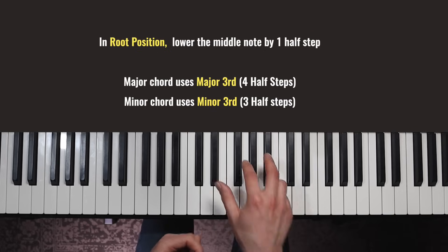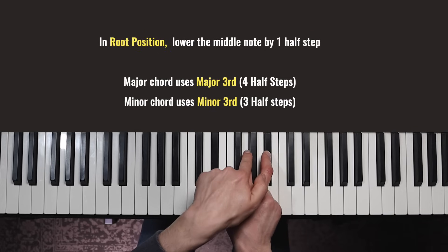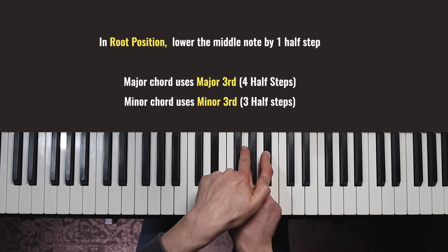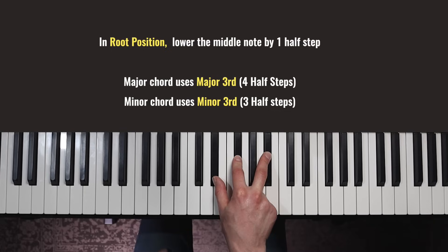If we look at E flat minor though, well, when we had E flat major, if we lower that by a half step now, this time we actually get a black key in the middle. And this happens to be the only minor chord that only has black notes in it. E flat or D sharp minor.